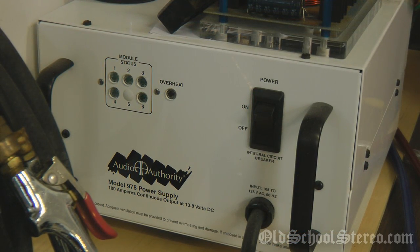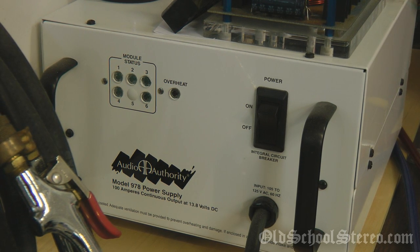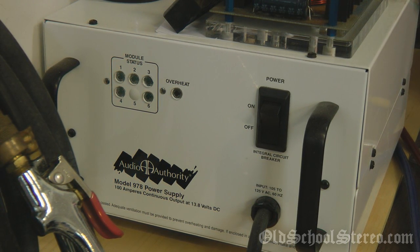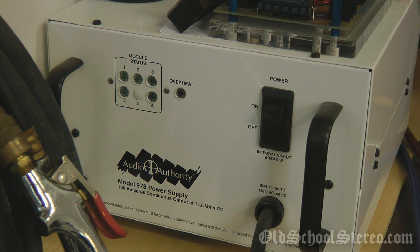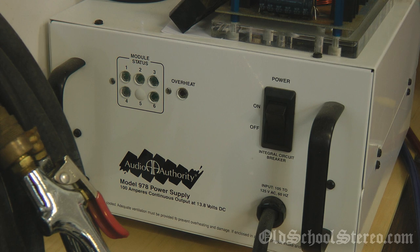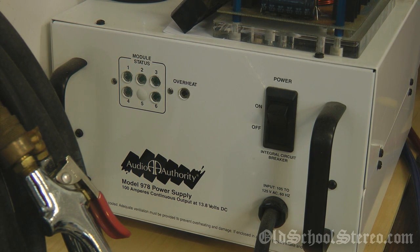And to feed the amplifiers for the test, I'm going to use this Audio Authority Model 978 100A power supply. And this will ensure, for the majority of my tests, I have plenty of juice, and it's 13.8 volts DC, which simulates the car audio environment.